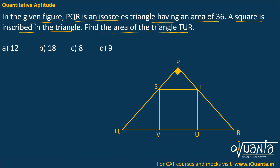We have a right-angle isosceles triangle PQR, so both legs are equal — let's call them x. Using the area formula: half × base × height = half × x × x = 36, which gives x² = 72, so x = 6√2.